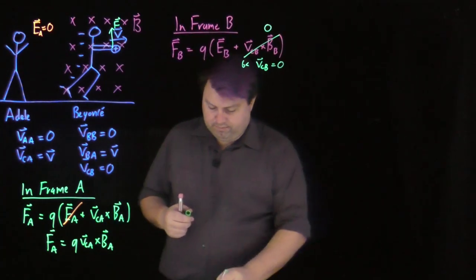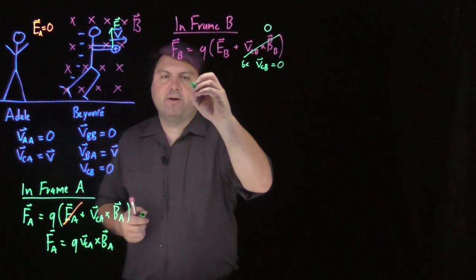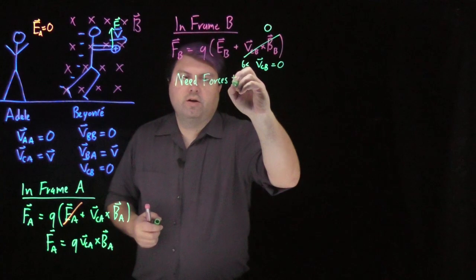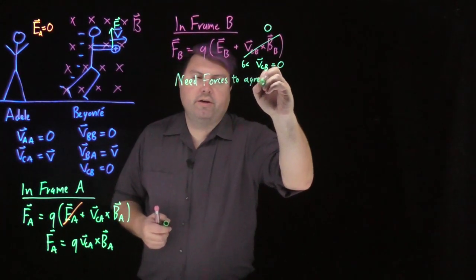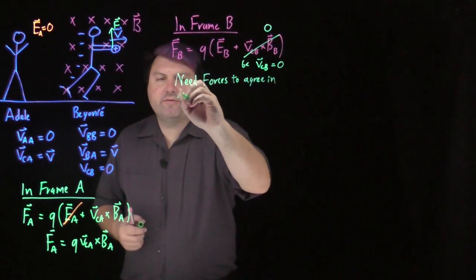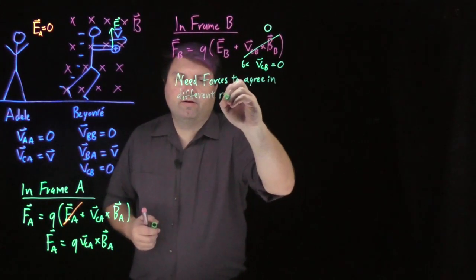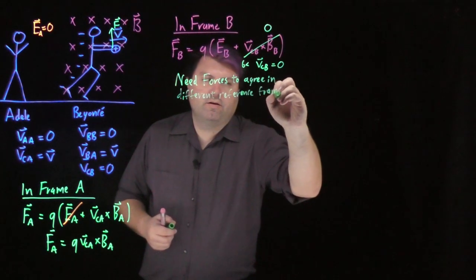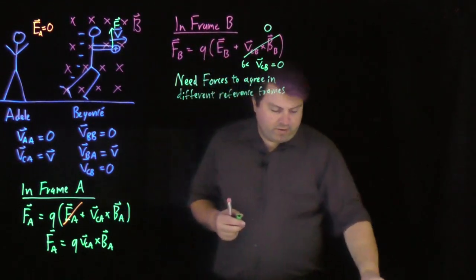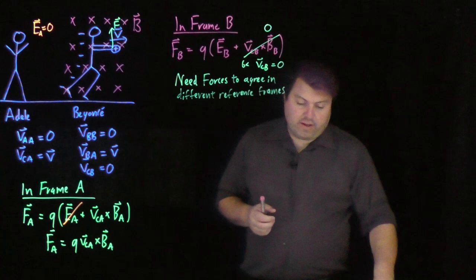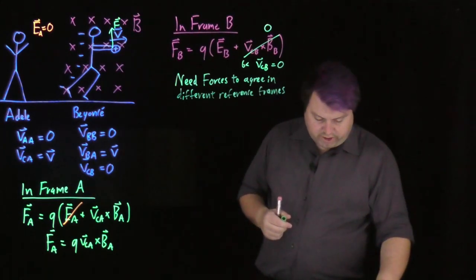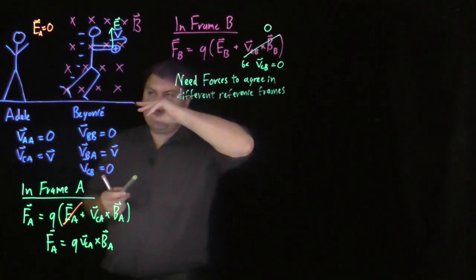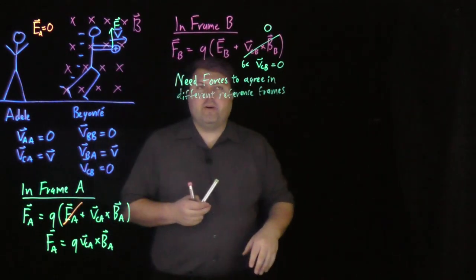This is a problem. And why is this a problem? Because we need forces to agree in different reference frames. We can have the velocity be whatever we want. We can have all sorts of other things be whatever we want. Positions can change and all that. But our forces have to agree. We can't have changing forces depending on which reference frame you're in.